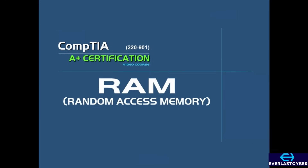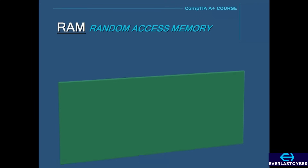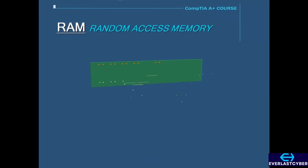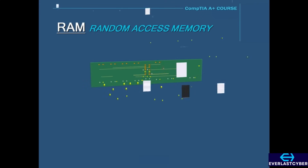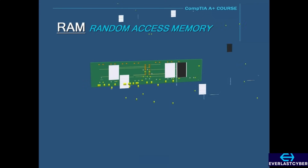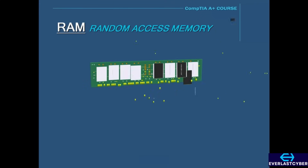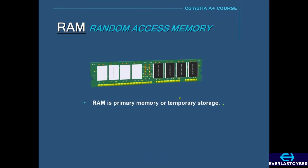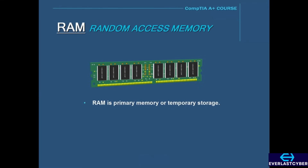In our previous video, we talked about secondary memory, which is permanent storage, and this dealt with hard drives. Now we will talk about primary memory, or temporary storage, and this is called RAM.